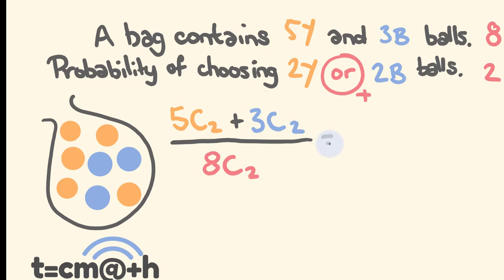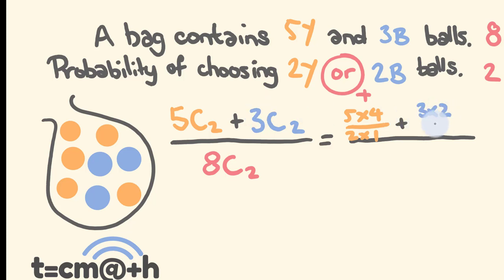Let's work this out. On top: 5C2 is 5×4 over 2×1. This is added to 3C2: 3×2 over 2×1. On the base, 8C2 — choosing two from eight — gives 8×7 over 2×1.